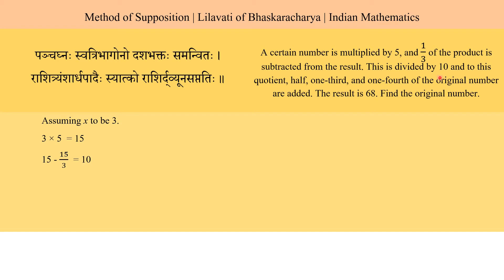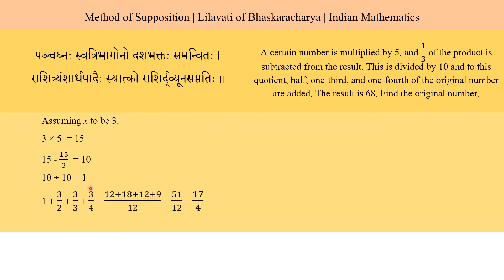This is divided by 10, so 10 divided by 10 is 1. To this quotient, half, one-third, and one-fourth of the original number are added. So to 1, we add 3/2 plus 3/3 plus 3/4, which gives us a value of 17/4.